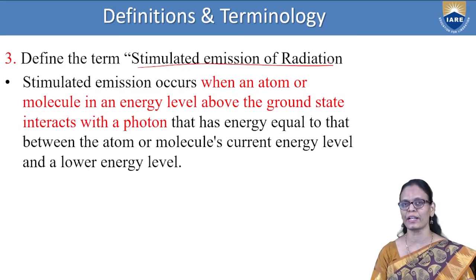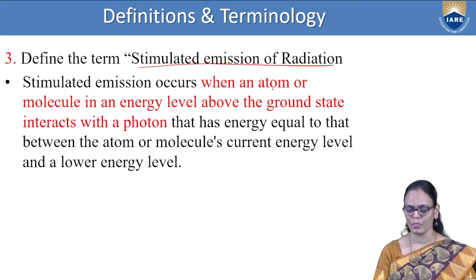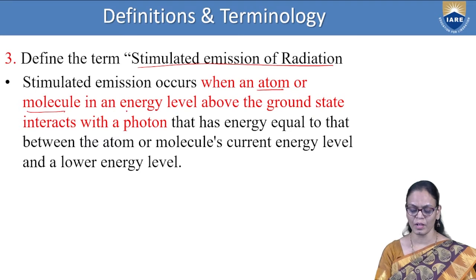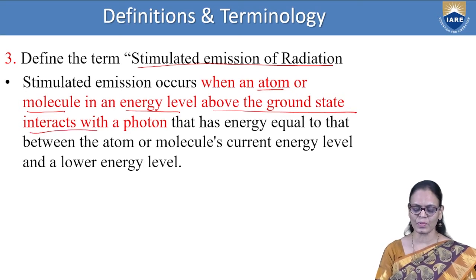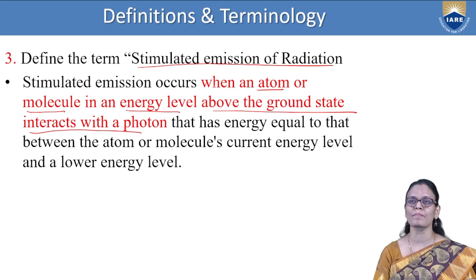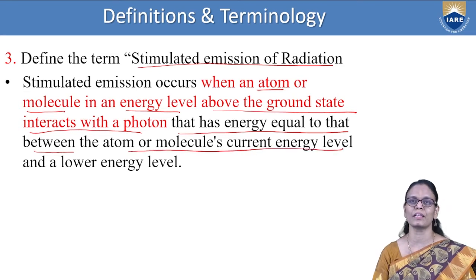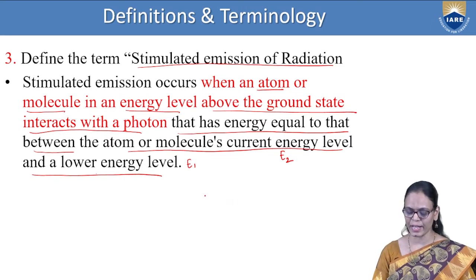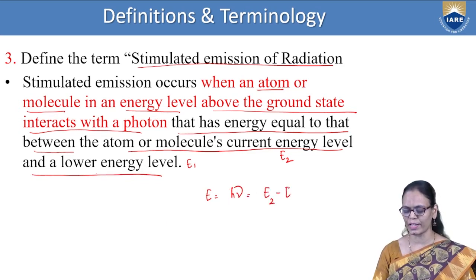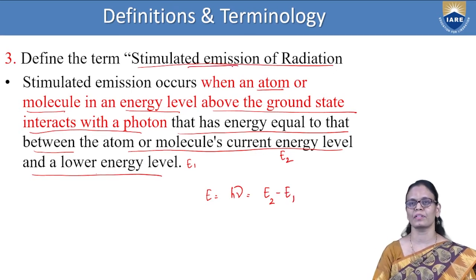Stimulated emission occurs when an atom or molecule in an energy level above the ground state — the excited state — interacts with a photon whose energy equals the difference between the atom's current energy level E₂ and a lower energy level E₁. If the atom in the excited state is excited with a photon E = hν equal to the difference between the two, there will be stimulated emission.